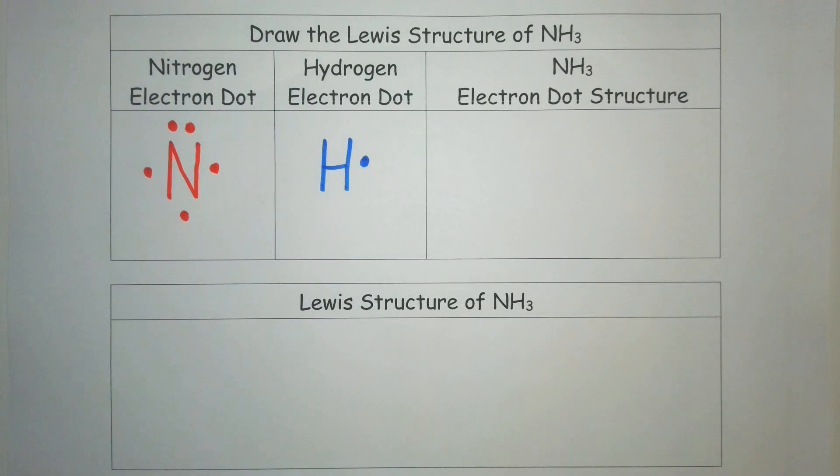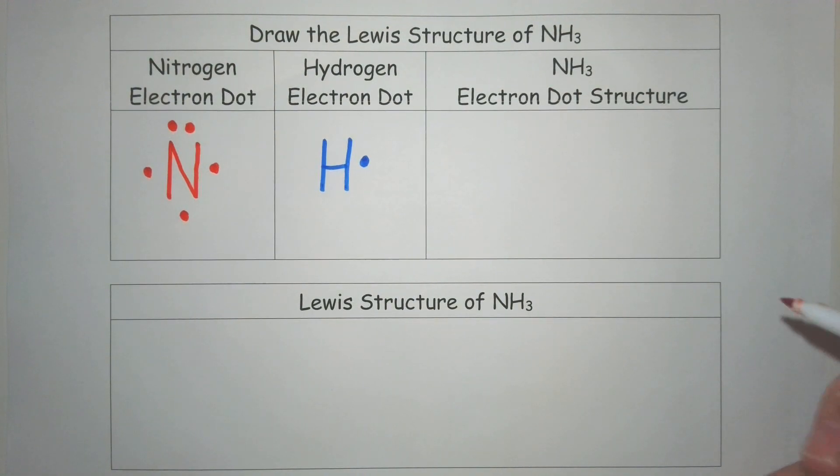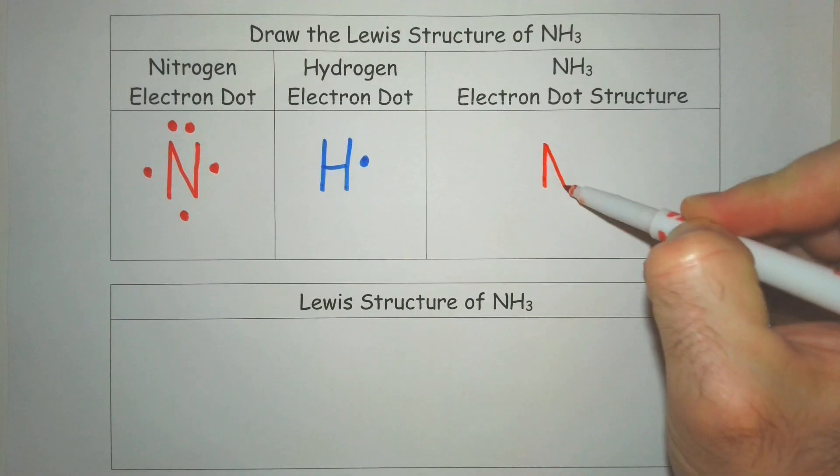Next, we're going to look at the structure altogether. And for NH3, we need to determine which one is the central atom. A quick rule is hydrogen is always on the outside. And so that means our nitrogen is going to be our central atom here.